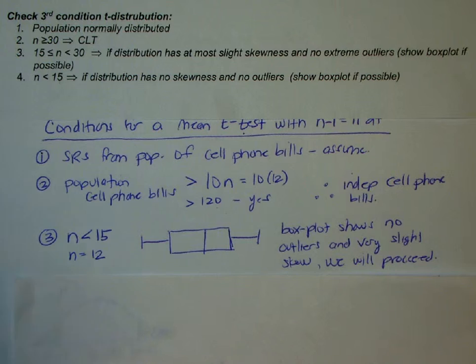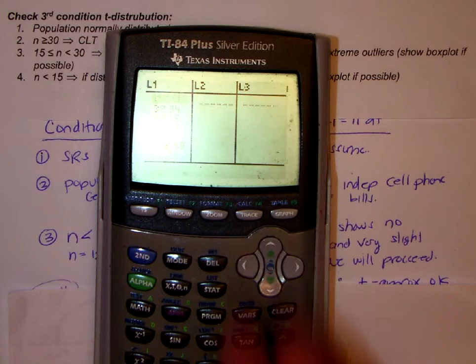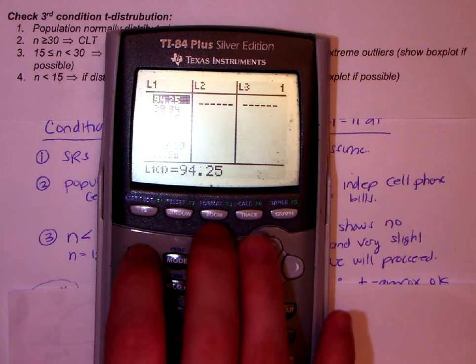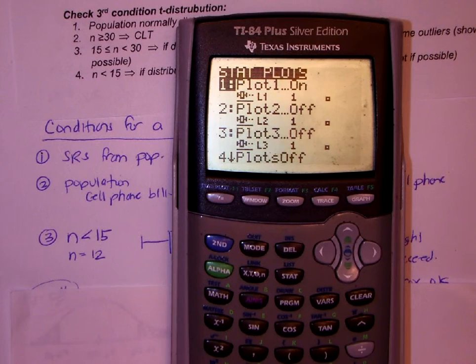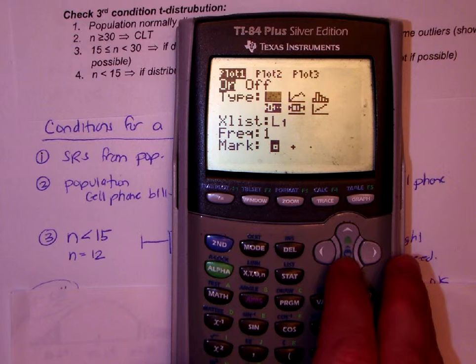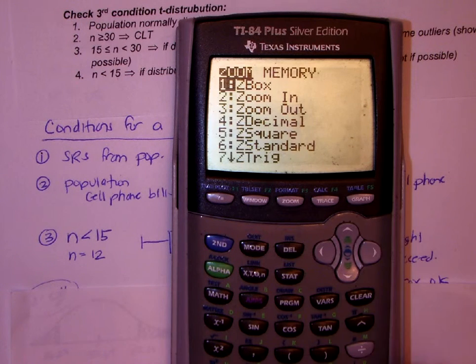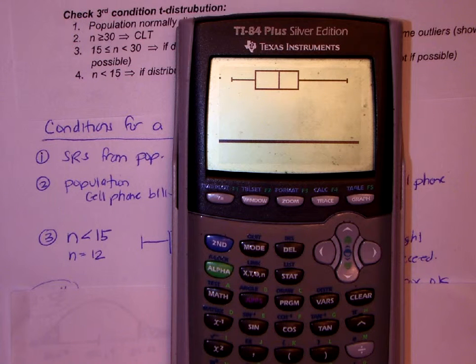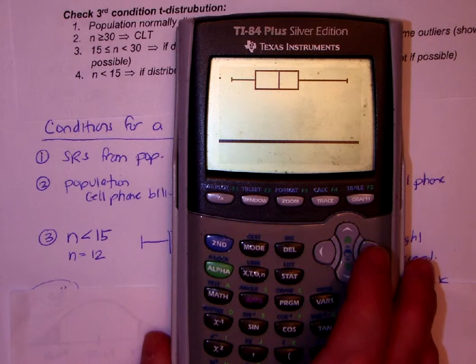I'm going to go to my calculator where you have all the data entered in your list. So if I go to stat, enter, or no, I'm sorry, you want to go to your plot. On your plot, I'm going to go to number 1 and set it up for a box plot that shows outliers. Make sure you've got L1, which is where your data should be, and the frequency list should also be L1. I'm going to do zoom 9 and take a look at the box plot. So no outliers, extremely slight skewness.